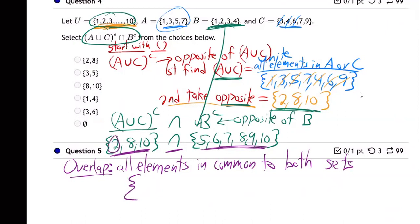So what elements are in common to both sets? Let's see, two? No, not two. Eight? Yep, they both have eight. Ten? Yep, they both have ten. So eight and ten. Yep, there it is. Eight and ten. That's the elements in common to both sets.